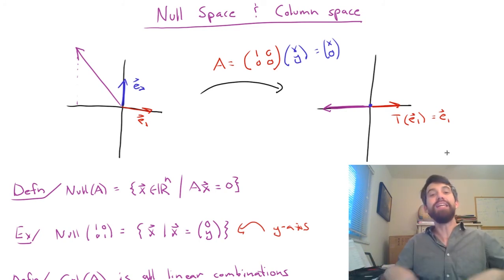And because vectors that are already living on the X axis don't change under this transformation, the entire X axis is in my image. Everything on the X axis is hit, well, by itself, among an entire vertical column of other possibilities. So I'm going to claim that the image or the column space of A is going to be the X axis.